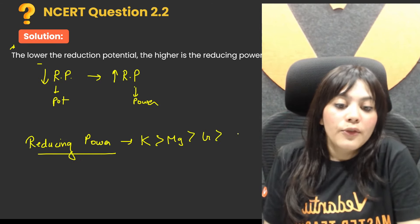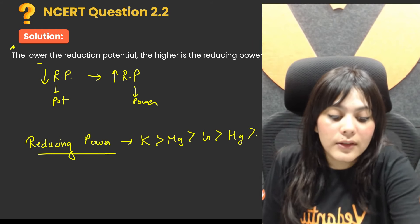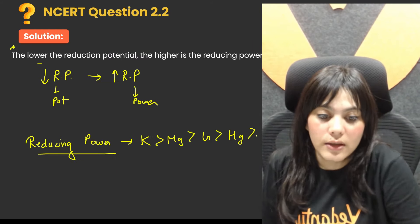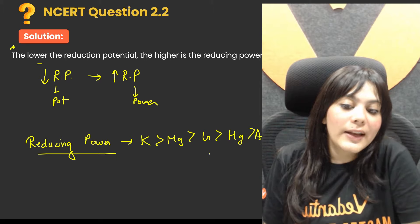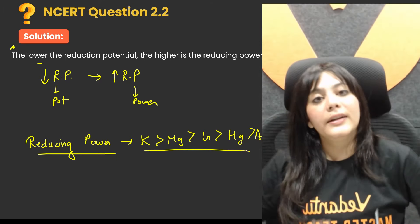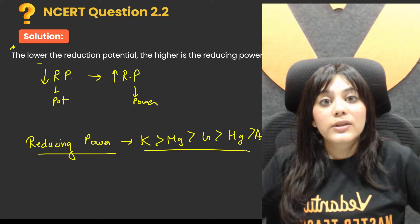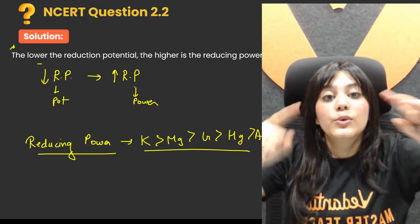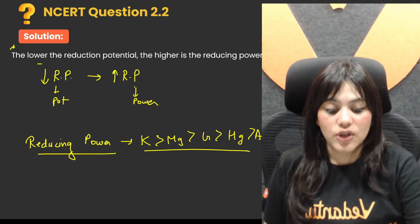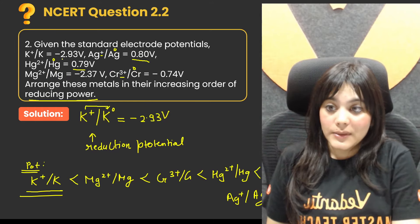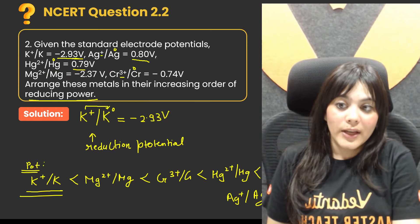It's the opposite order exactly. Whoever has the lower reduction potential has the higher reducing power. It's an inverse relationship. The more negative the reduction potential, the higher its reducing power.